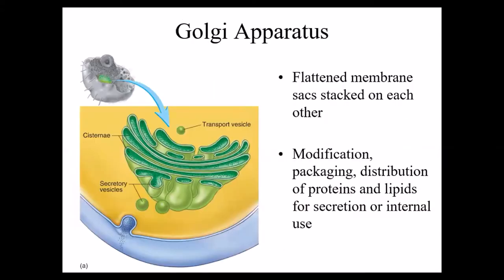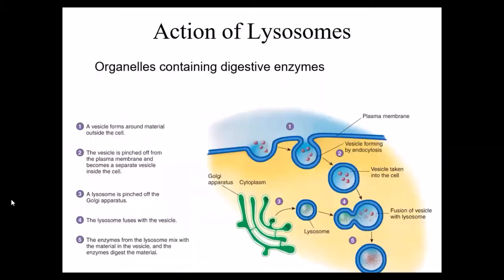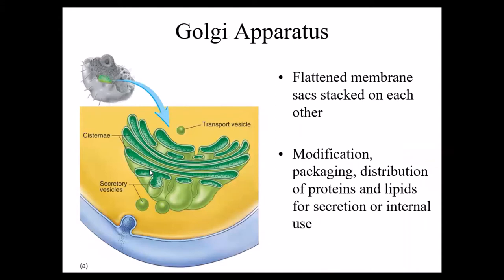Another membrane structure found in a cell is called the Golgi apparatus, sometimes called the Golgi body. It's a flattened type of membrane system where substances — chemicals, proteins, and lipids — get packaged or modified. The chemicals go through this membrane structure and are put inside of little storage vesicles. Sometimes they are stored inside of the cell, and sometimes they are secreted. If a cell is a gland cell, it may secrete a substance — maybe an enzyme or hormone — to the outside of the cell by putting it inside a storage vesicle, which then fuses with the cell membrane.